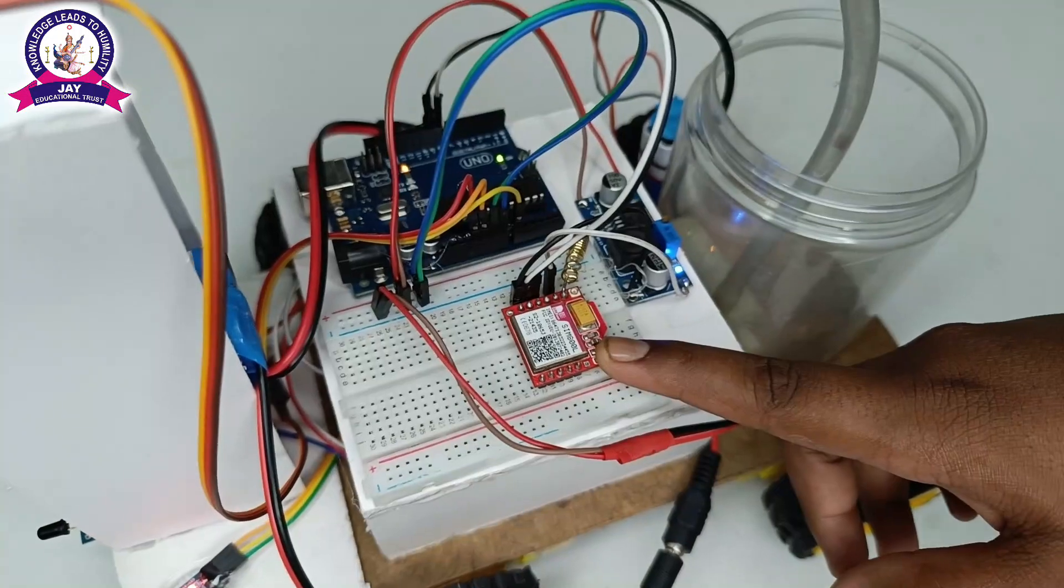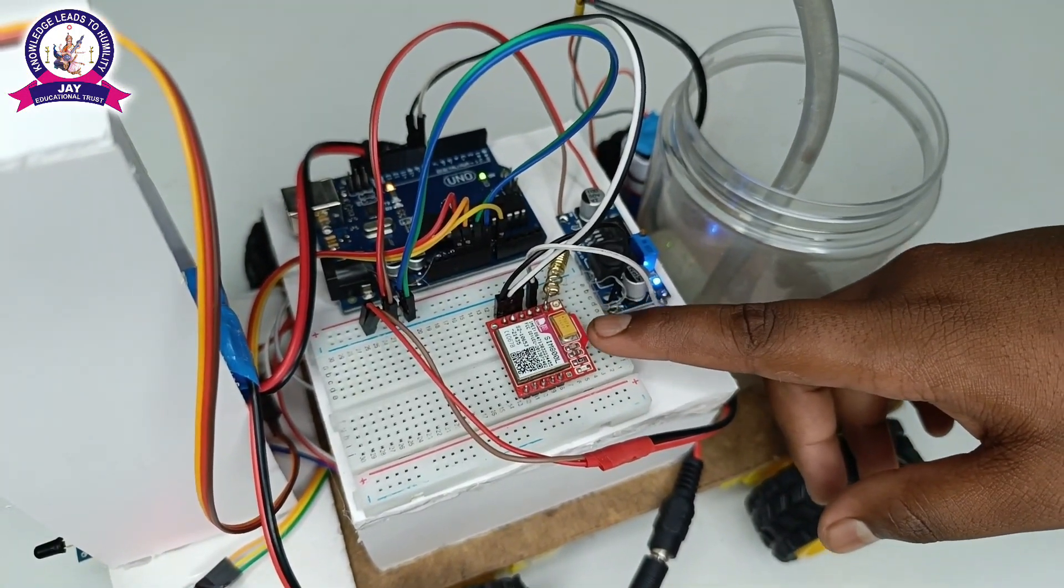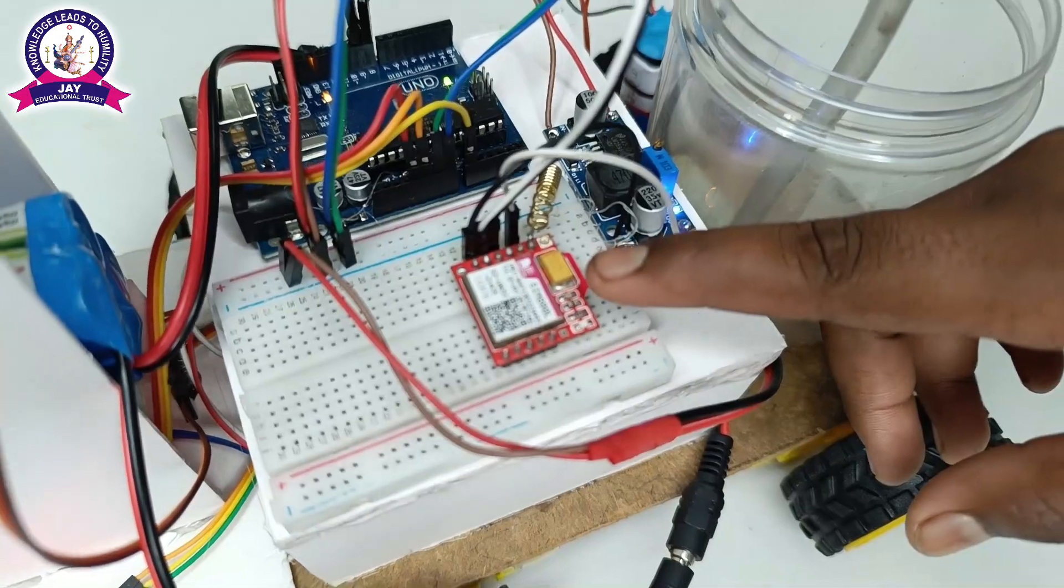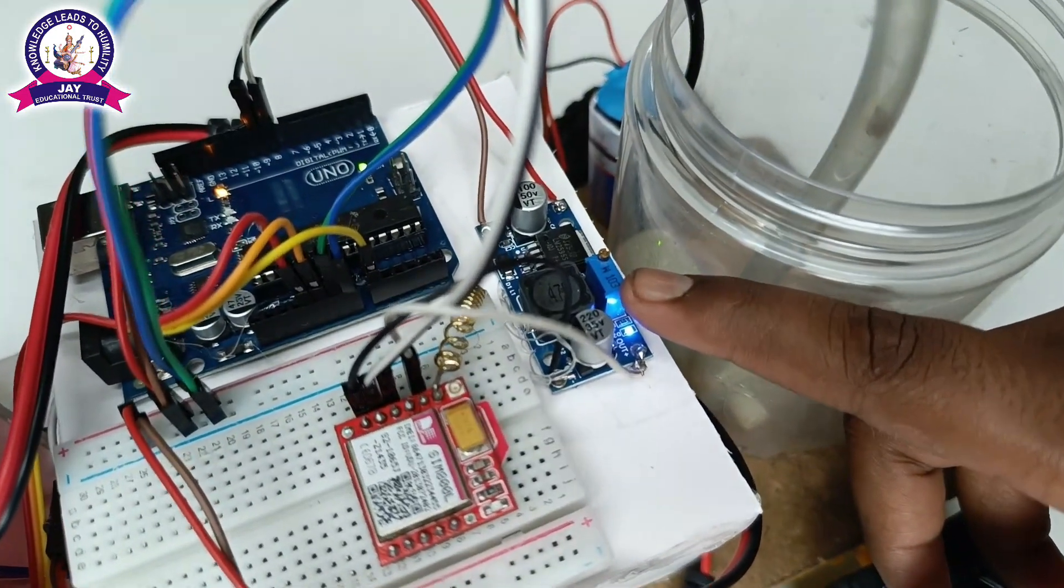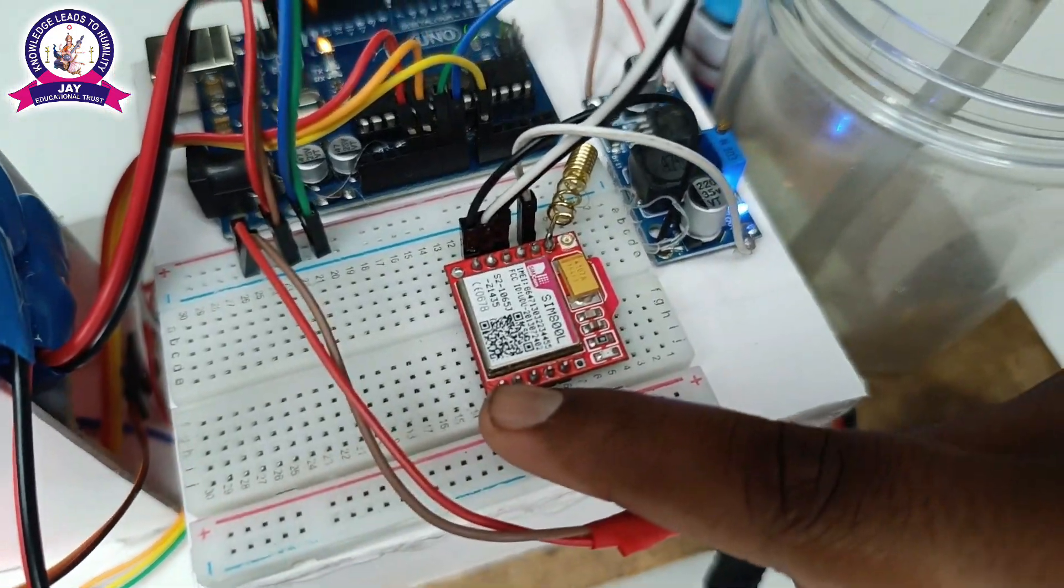This is a GSM module. With the help of this module we can receive the fire alert to our mobiles by messages and calls. This is a voltage regulator that supplies secure power to the GSM module.